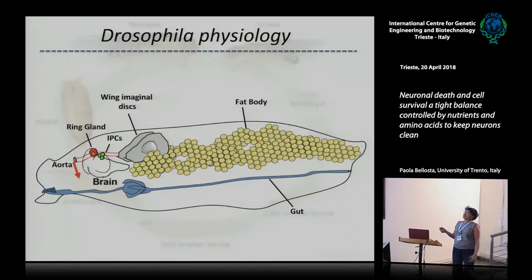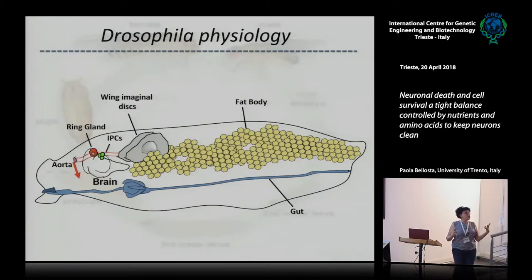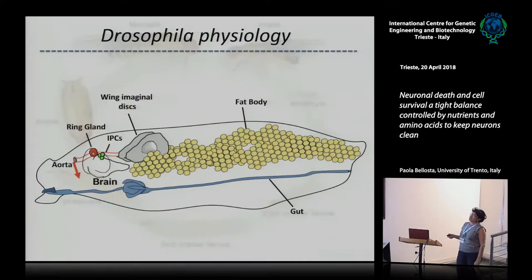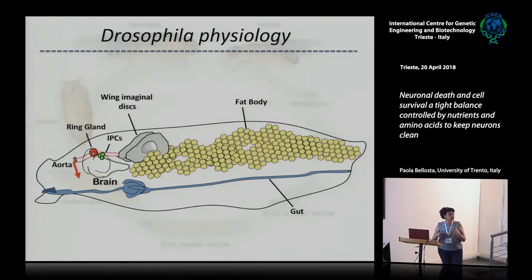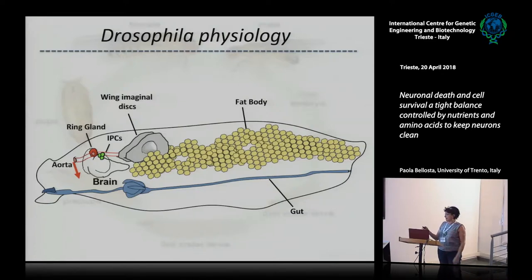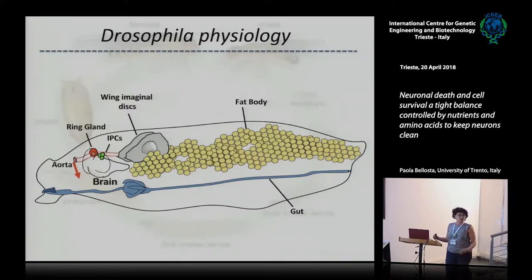So, physiology of the fly. The most important tissues to consider are the fat body — that white fat filling the larva when you open it — then the imaginal discs, which are important for the animal to grow because those tissues become the organs in the adult, and the brain. The brain is regulating growth through the production of hormones, as we will see in a moment.